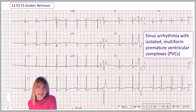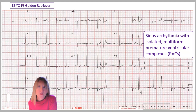Hey, everyone. On today's episode of Curestv, we're going to revisit an ECG from last time from a 12-year-old female spayed golden retriever. What we had concluded about rhythm diagnosis was that this dog had a sinus arrhythmia with a couple of premature ventricular complexes, or PVCs.